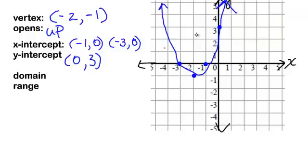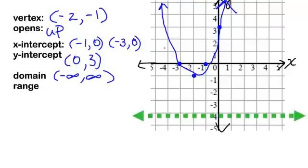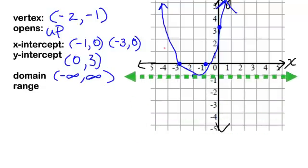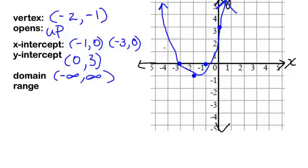For our domain and range, the domain is negative infinity to positive infinity because all of my x's would be included on this graph. For my range, I do not have any y's that are part of the picture down below. My y's don't start until negative 1, and then it does go to infinity. So my range starts at negative 1 — it does include negative 1 — and it goes to positive infinity.